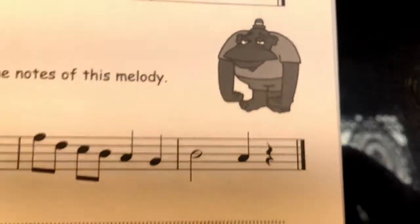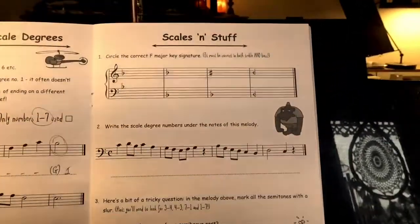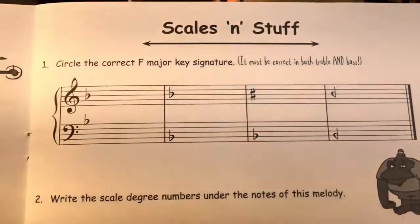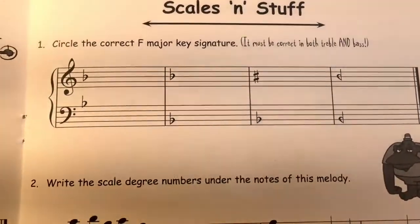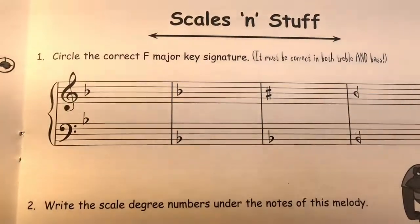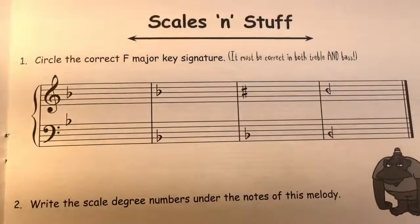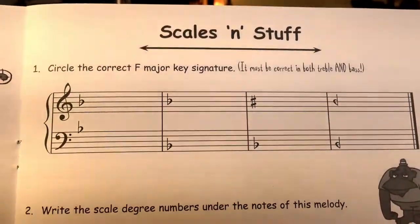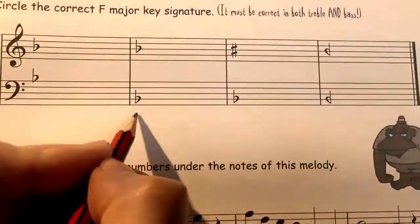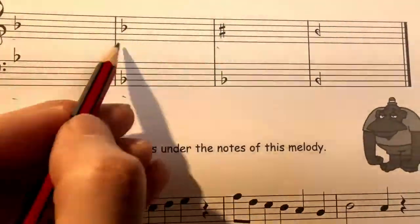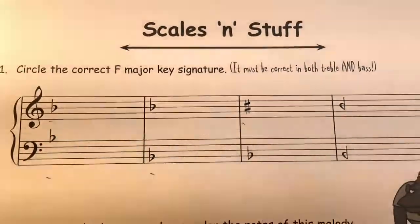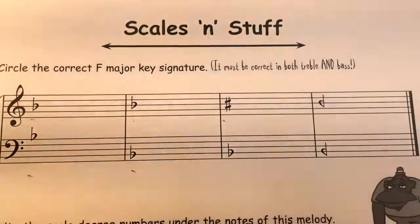Finally, page 39: scales and stuff, which is basically a revision page. Circle the correct F major key signature — you can flip back through your pages to find the F major scale. Check carefully where each accidental needs to be in both clefs, and make sure the accidentals are written in the right way, pointing the right direction.